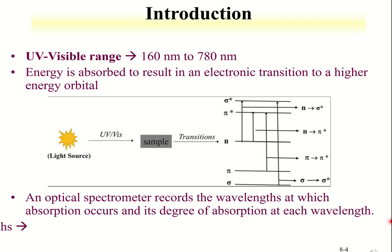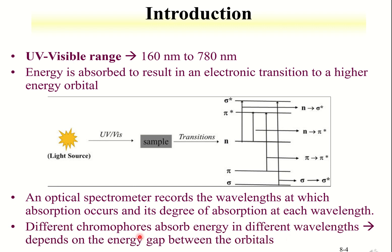Note that different chemical structures absorb at different wavelengths due to different chromophores. Hence, it is important for you to know the wavelength in which the absorption occurs. You can either obtain the value from literature or determine it experimentally.